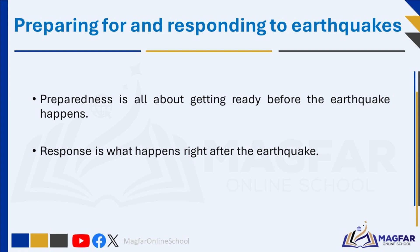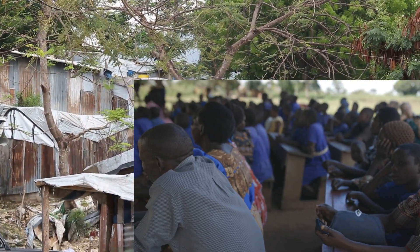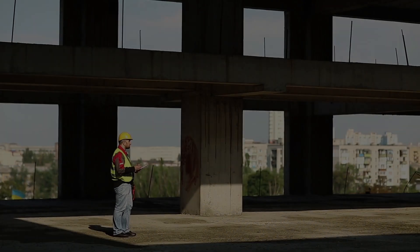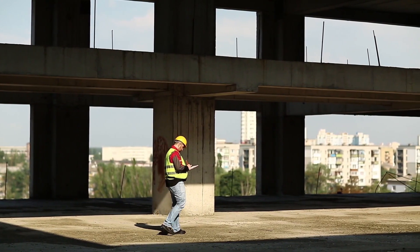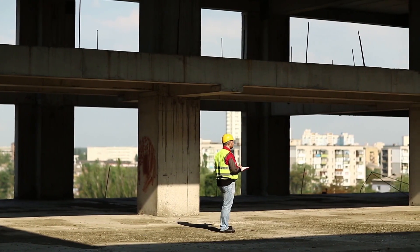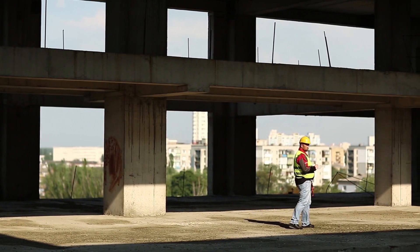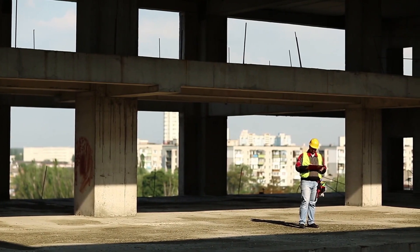Now let's look in detail at how people can prepare for an earthquake. Preparedness measures include the following. Education and awareness: educating the public about earthquake risks, safety measures, and emergency procedures can help communities prepare for and respond to earthquakes effectively. Strict building regulations: implementing and enforcing strict building regulations ensures that structures are designed and constructed to withstand earthquakes.